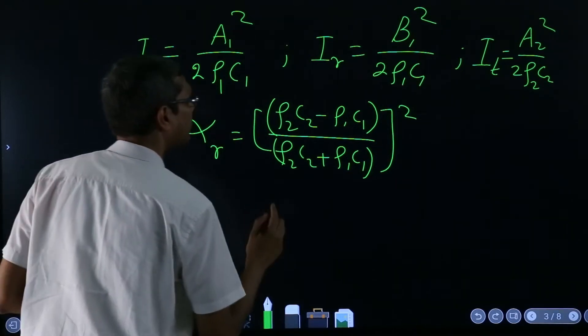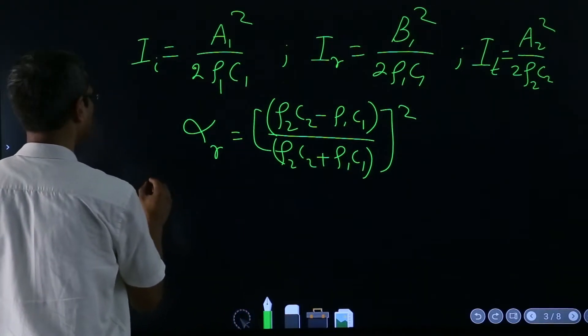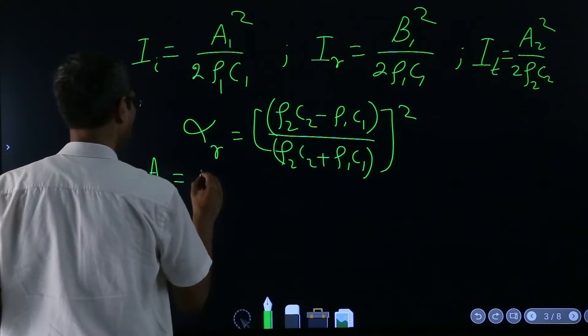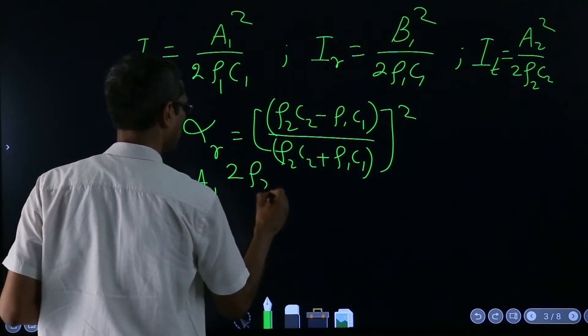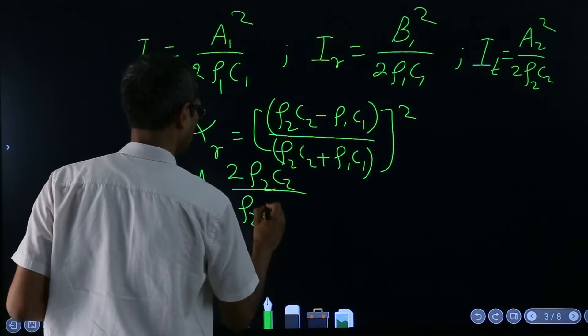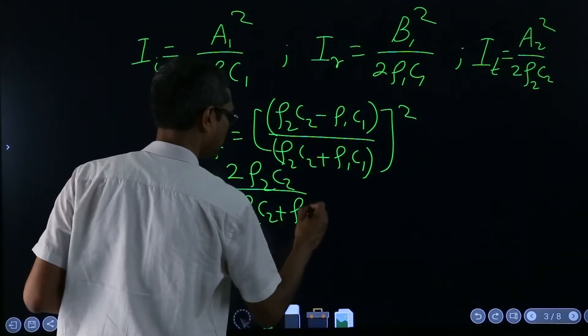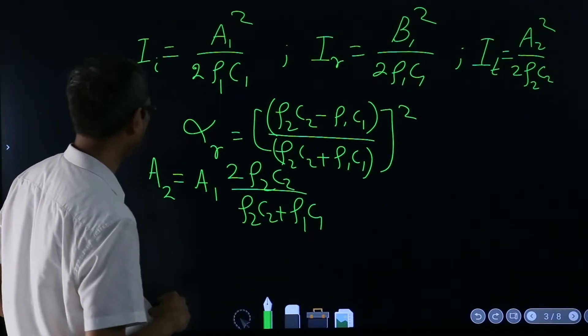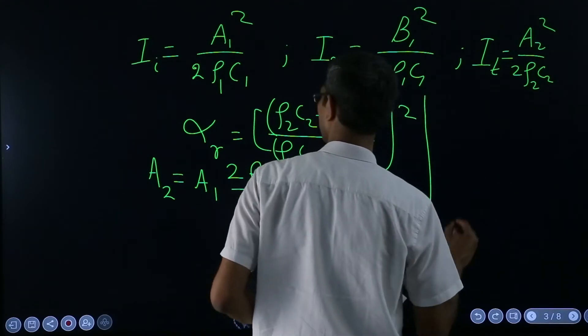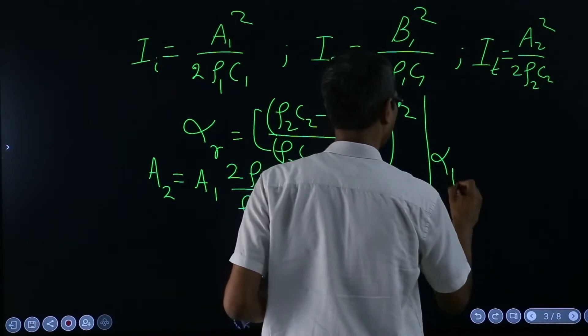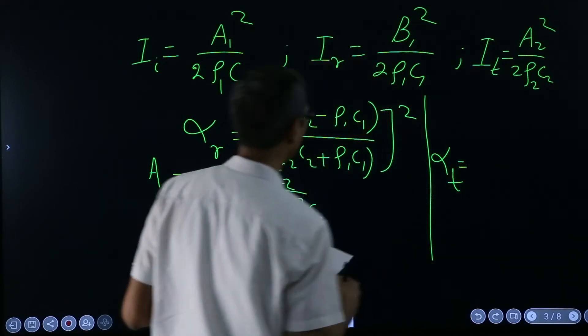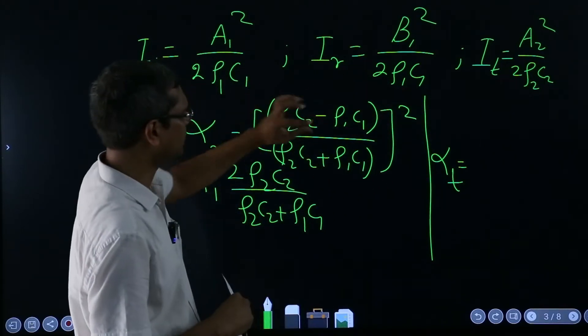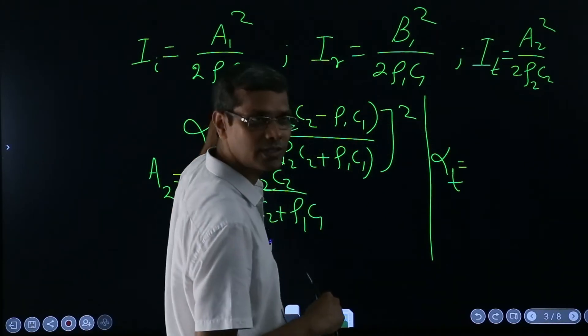And then the second thing, I do not remember whether I had written that or not, did we calculate that a₂ will come out to be a₁ times 2ρ₂c₂ over (ρ₂c₂ + ρ₁c₁), okay we wrote it like that. And from there we also saw that alpha transmitted can be, so this will be this by this, so there will be a ratio of ρ₂c₂ to ρ₁c₁.